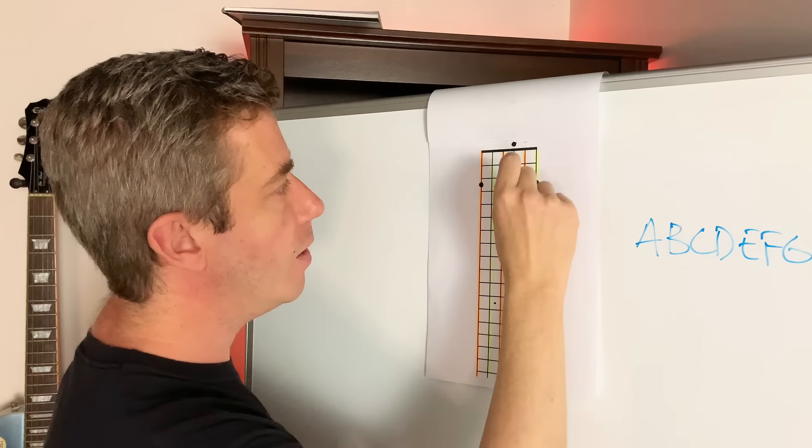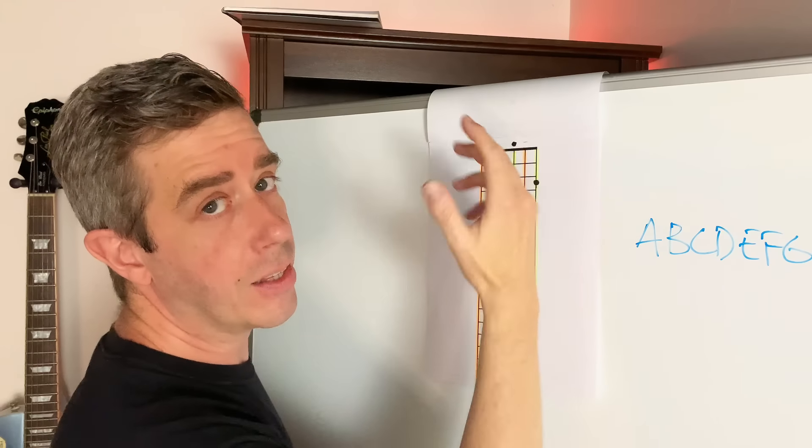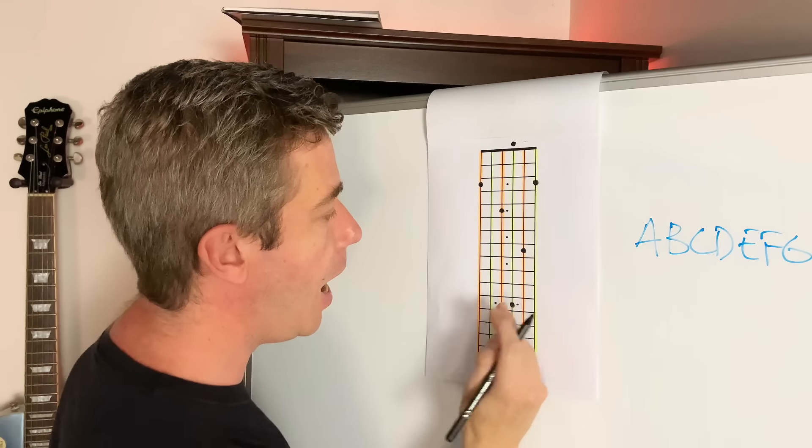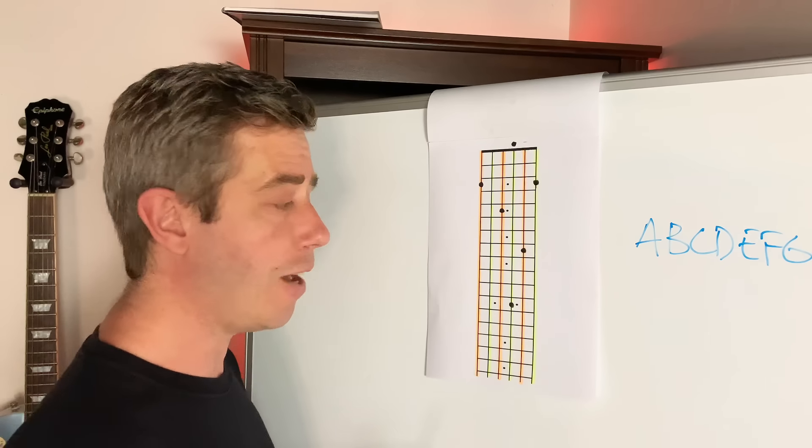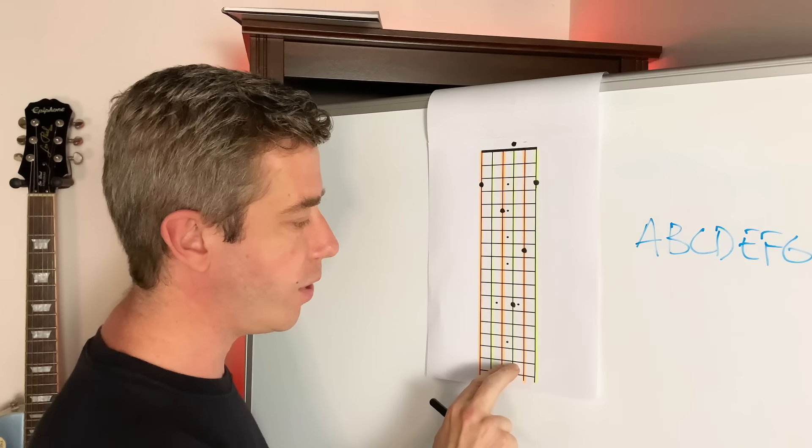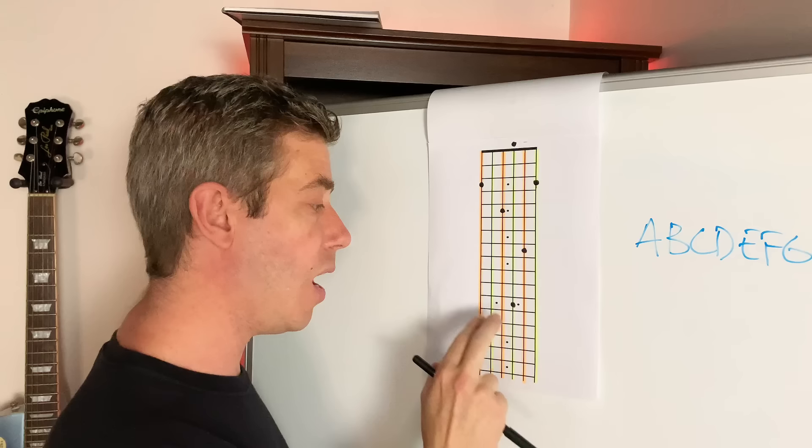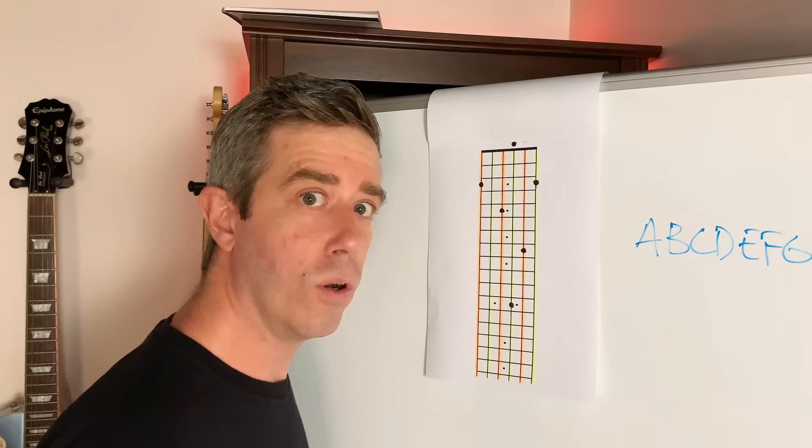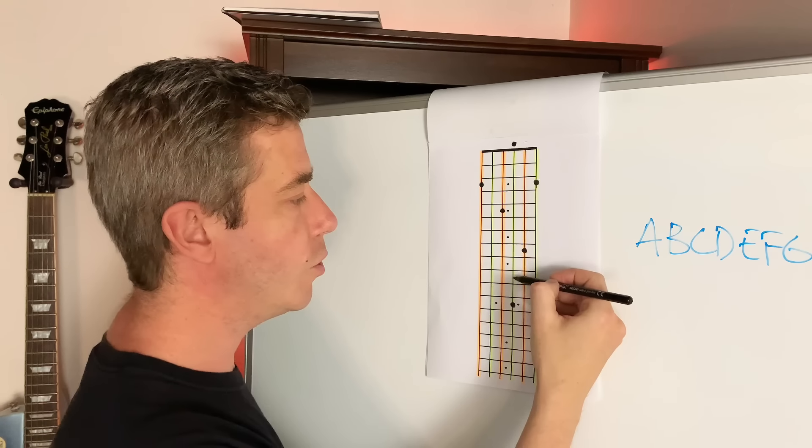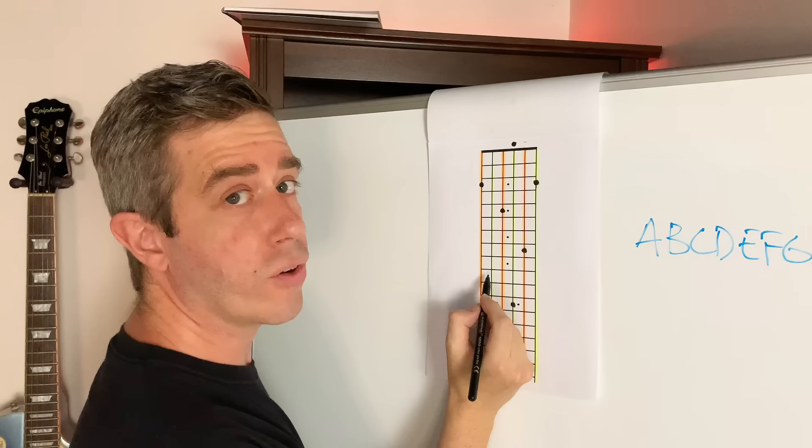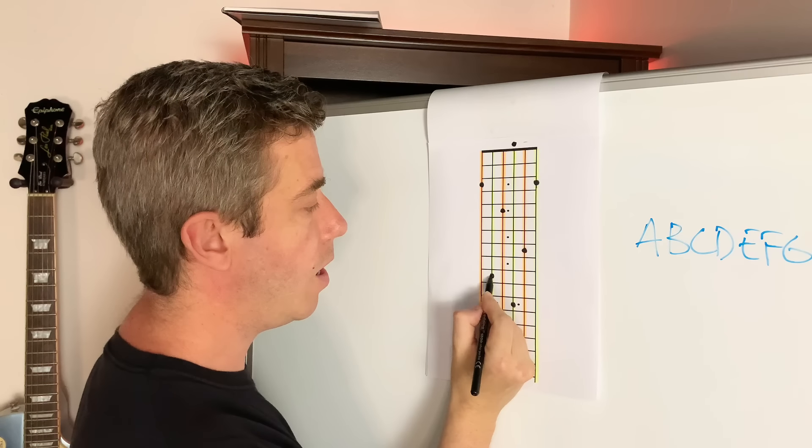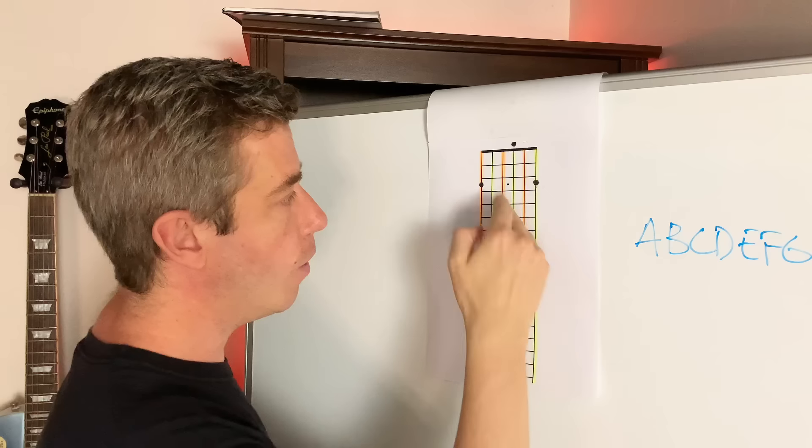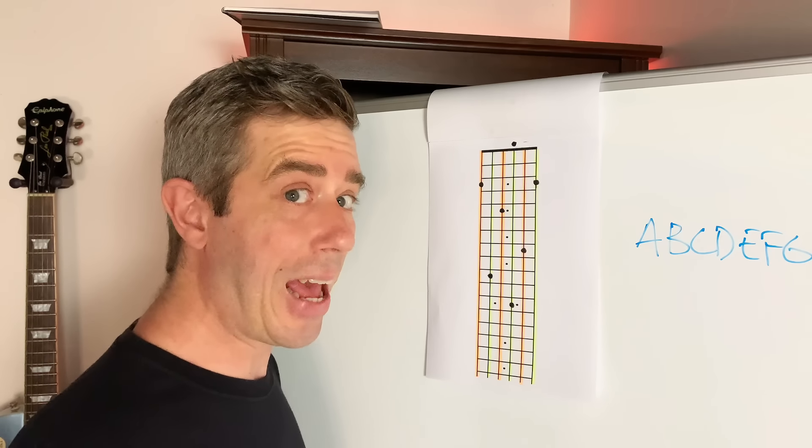So the twelfth fret is the zero fret. The open strings is the same as the twelfth fret. So I'm just going to place that one here. Now I can bounce again here. Middle pair of strings. To find that same note on the thickest pair of strings, how many frets? Two. One, two. Yellow or orange string? Yellow. Now I know that note on all my strings. I just found it that easy.